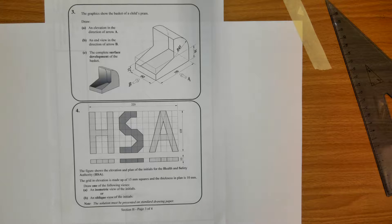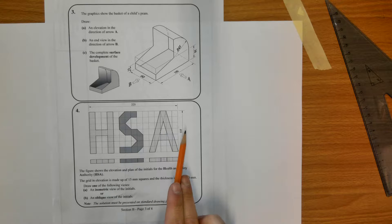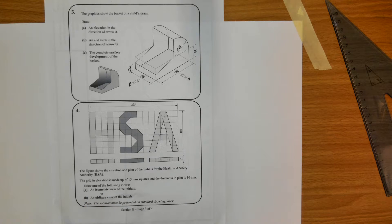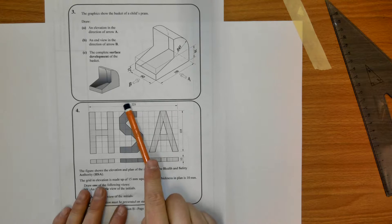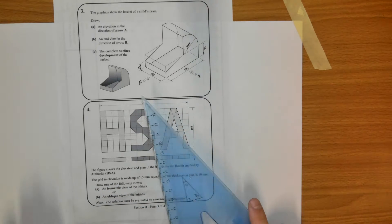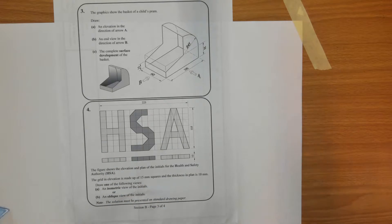Welcome to this video on the 2015 Section B Question 4, ordinary level. This is based on the HSA logo, and we're going to do this in isometric. Part A: the grid is 225, the height is 105, so I'm going to set up this grid right now.